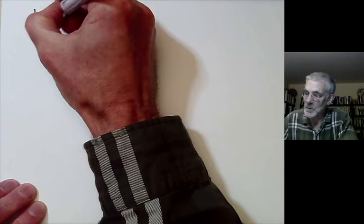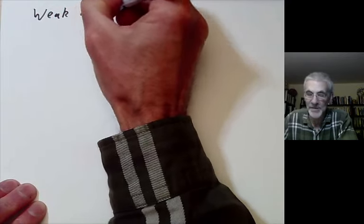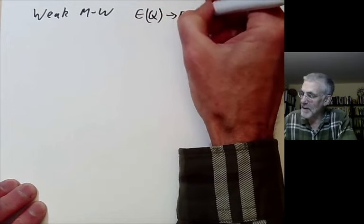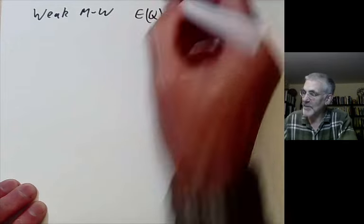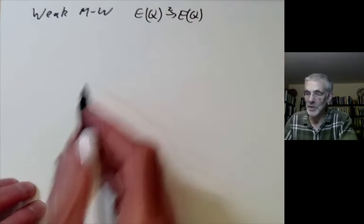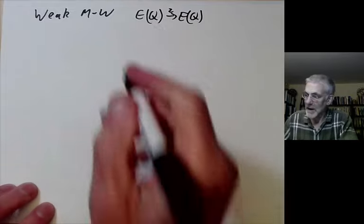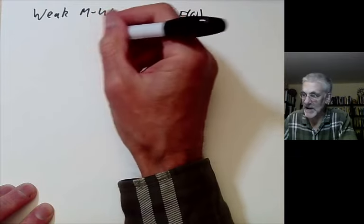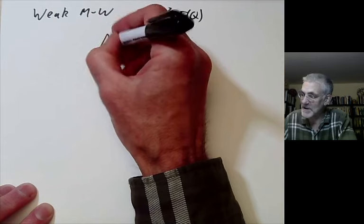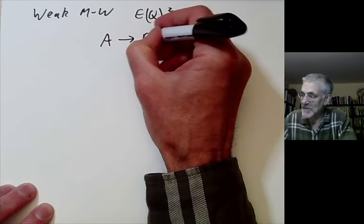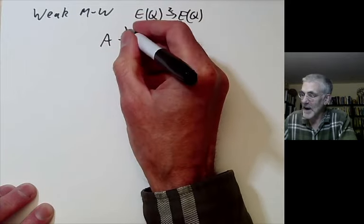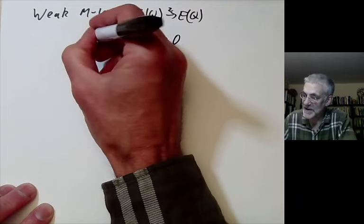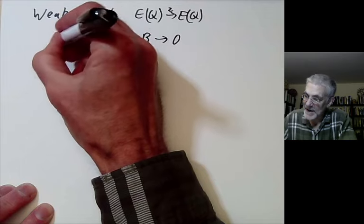Next, we want to discuss the weak Mordell-Weil theorem, where you take an elliptic curve and you map it to an elliptic curve by multiplying it by two and look at the quotient. In fact, more generally, we can work with an isogeny from the elliptic curve to itself, from one elliptic curve to another elliptic curve. So suppose A and B are elliptic curves, or for that matter, abelian varieties. We choose a map from one to the other, which is an isogeny. That means roughly it has to be surjective and it has a kernel.